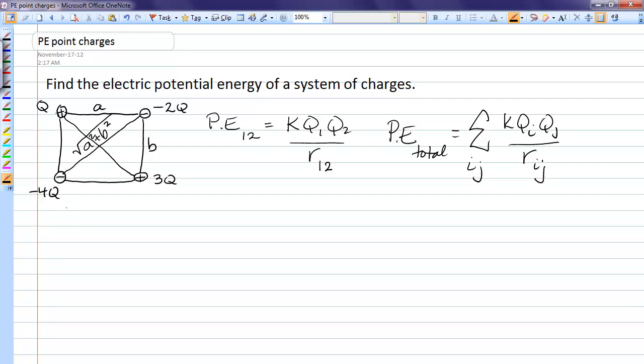Let's go ahead and add up all the pairs of charges. The total potential energy will be, I can pull the K out, and we'll charge pair Q with negative 2Q. The distance between those charges is A, and I'll pair Q with 3Q, distance between those is the root of A squared plus B squared. Then we can pair Q with negative 4Q, distance between those is B, moving around the rectangle.